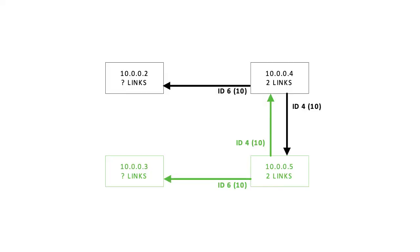We just collected R5's router LSA from R4 and learned a little more about how the network is structured. R5 has router ID 10.0.0.5 with two links: one goes back to R4, which is that backlink making our graph bi-directional with two different unidirectional edges. The cost of both links is 10. We've also discovered a new node, R3, with router ID 10.0.0.3. Let's explore router 3 next.